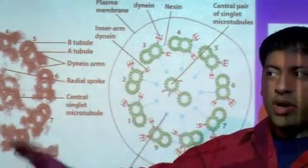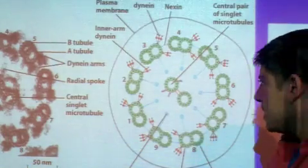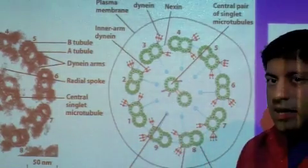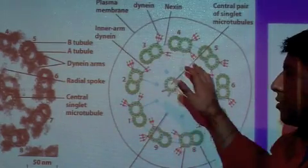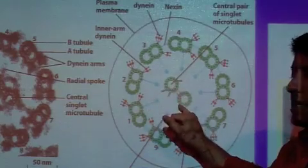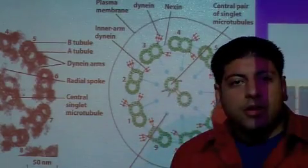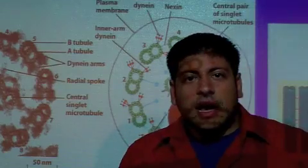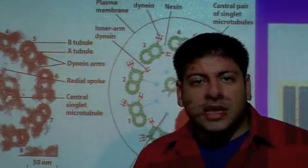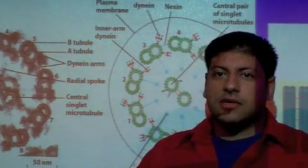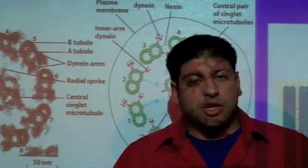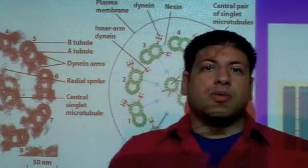So continuing on then, all these microtubules are arranged. You have your doublets on the outer rings here and two singlets in the middle. Now remember, you also have to have various microtubule associated proteins that act as spacers to keep everything spaced out so you don't have microtubules tangling up with each other.